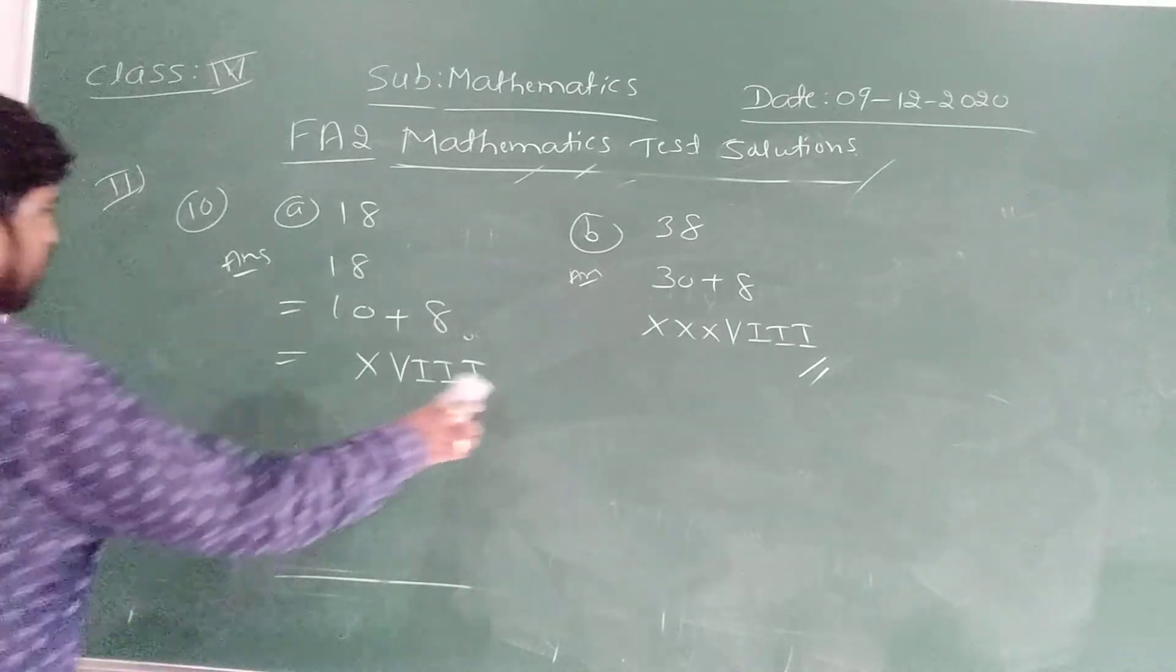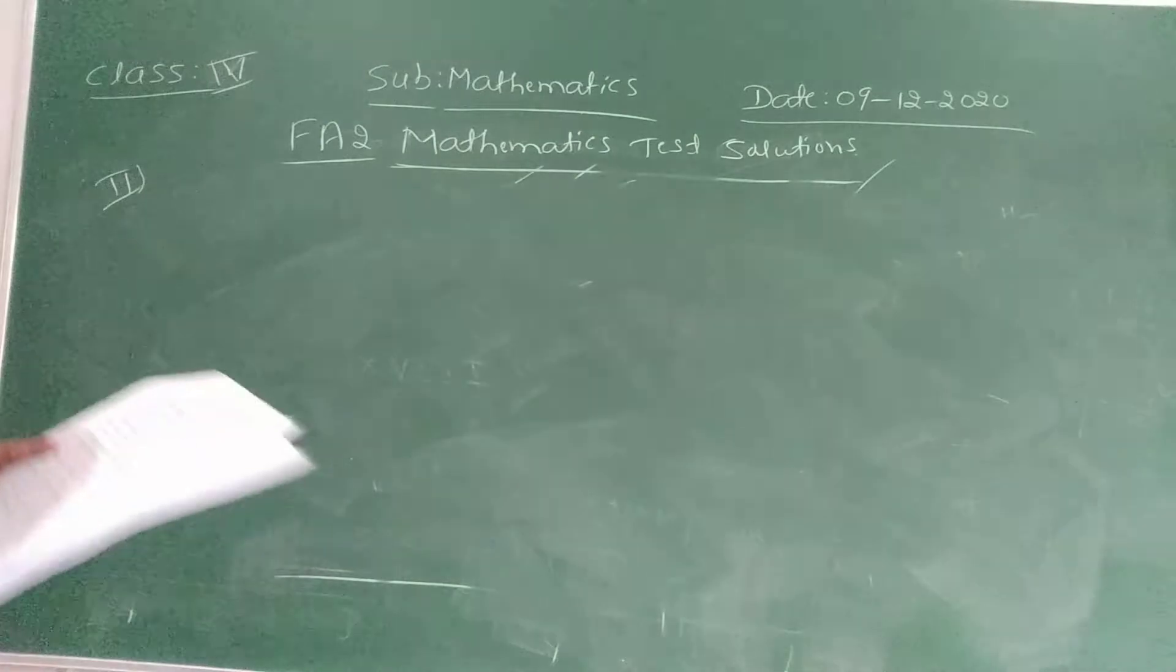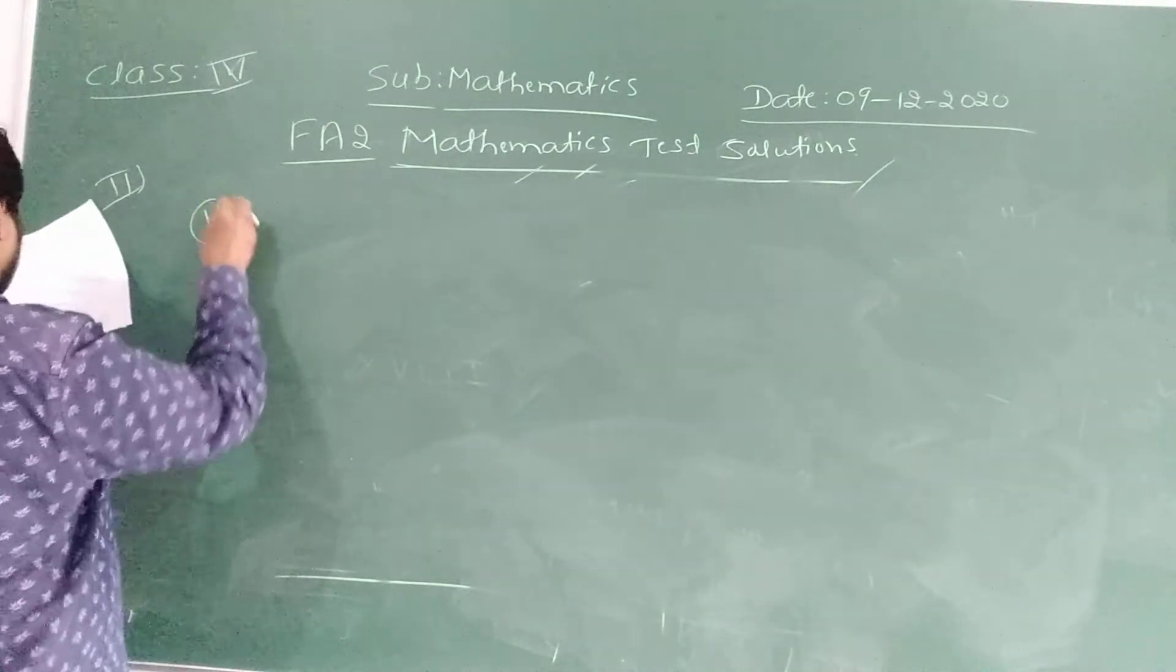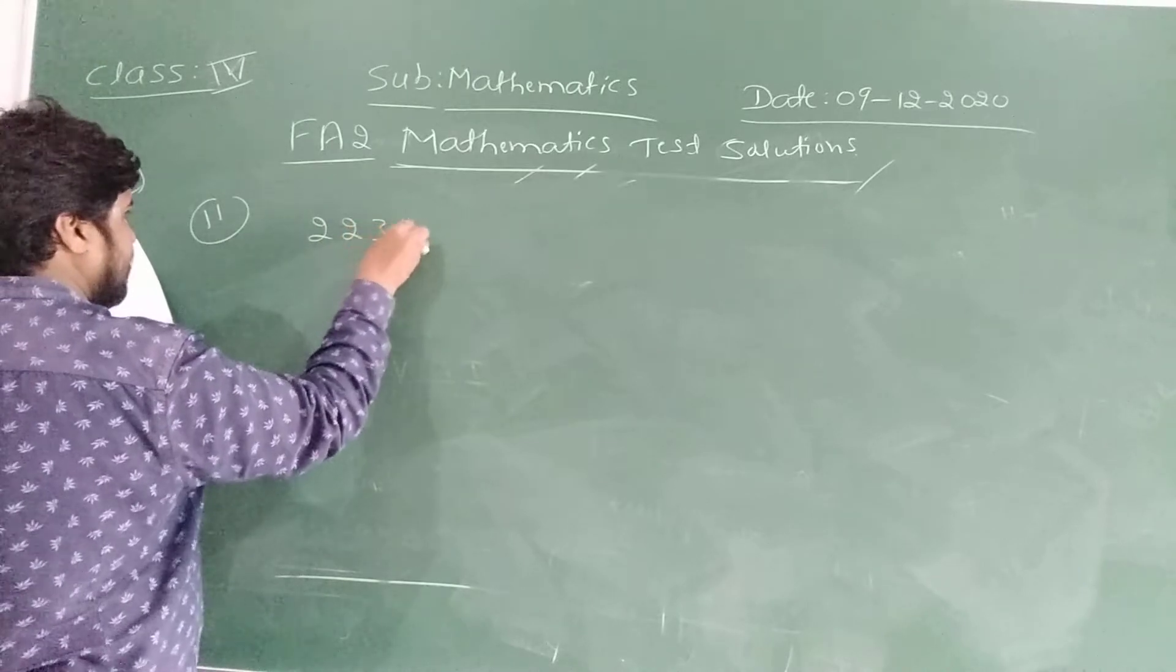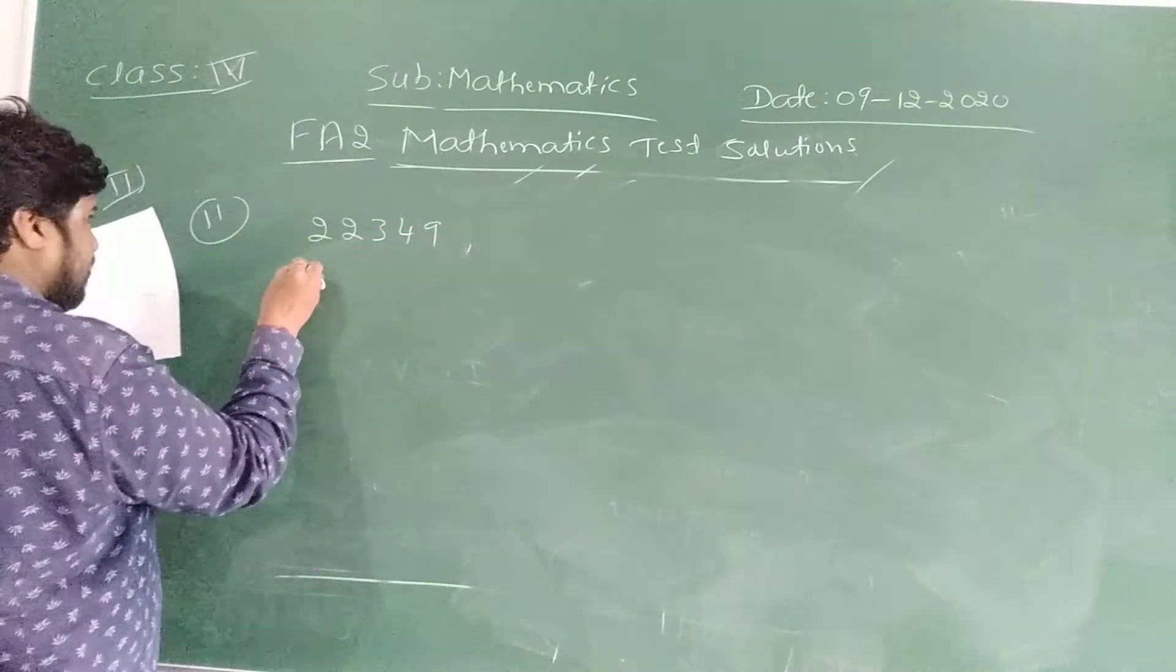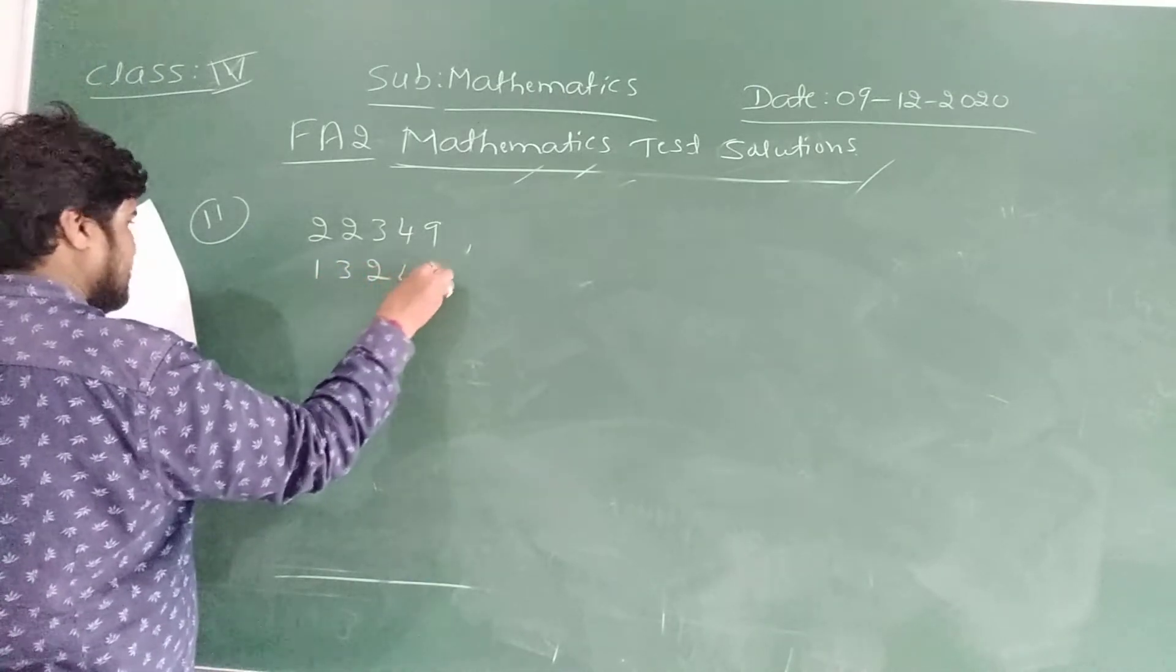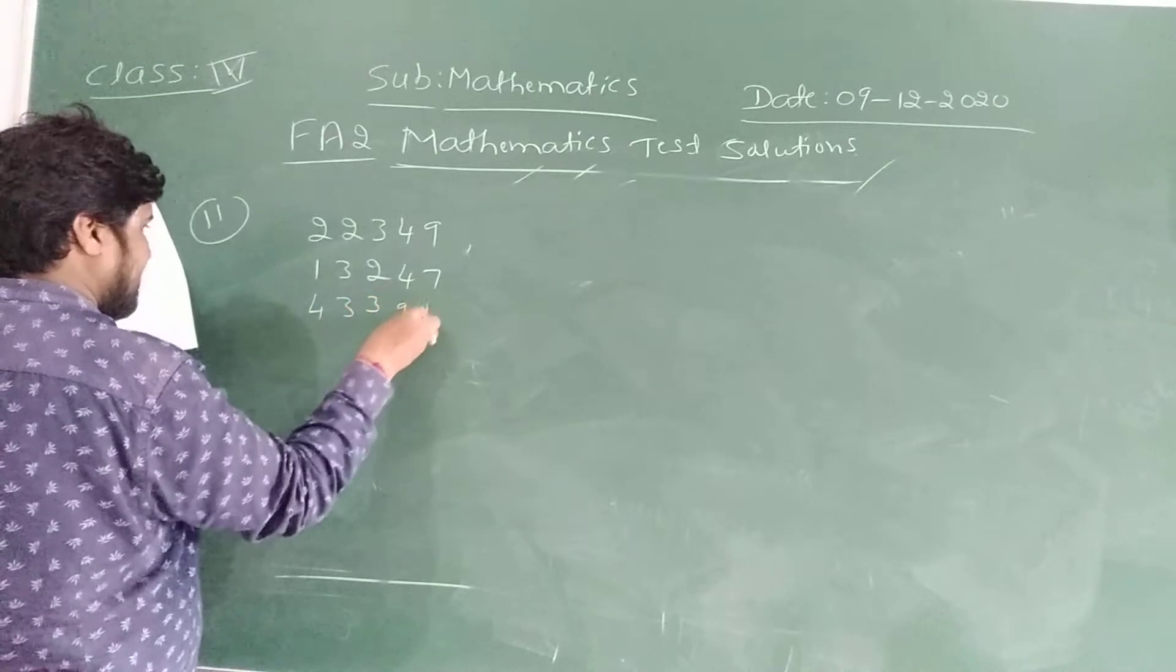Find the sum of, question number 11 is find the sum of 23,249 comma 13,247 comma 43,394.